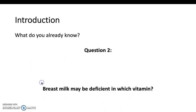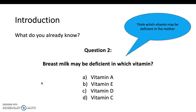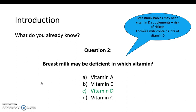Next question: breast milk may be deficient in which vitamin? Think about which vitamin the mother may be deficient in, especially in this country. It's vitamin D. This is really important because if the mother is deficient in it, which is quite common, breast milk babies may need vitamin D supplements because of the risk of rickets. This is one of the benefits of formula milk because it contains vitamin D supplements already.